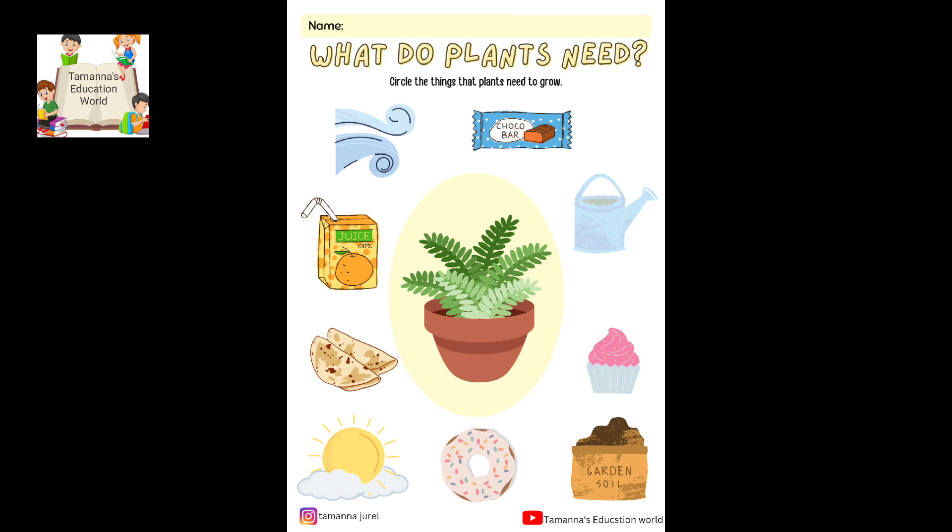Plants need sunlight to grow. Next — chapatis. Do plants need chapatis to eat? No, plants don't eat chapatis. Plants make their own food. Next — fruit juice. No, plants give us fruit and we make juice from fruits. Plants do not need fruit juice.